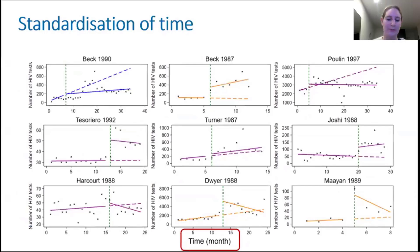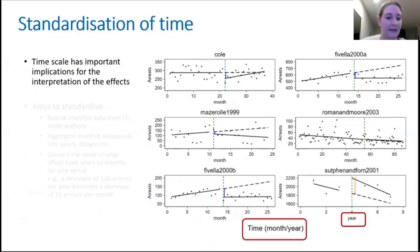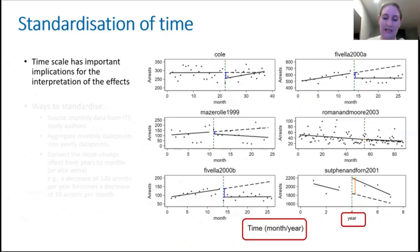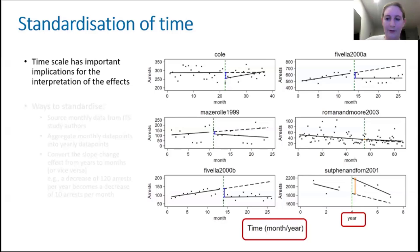Standardization of time. In this example, all nine studies have monthly data points looking at the number of HIV tests per month. But that isn't always the case. Here's another example looking at the number of arrests over time: five of the six studies have monthly data, but one has yearly data. The interpretations of effects are quite linked with time — the time interval of data points is important to how we interpret those effects. Remembering slope change, the interpretation includes the unit of time: an increase or decrease in arrests per month versus per year.